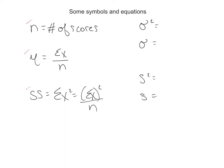So the first one, sum of x squared, you take all the x's, all the scores, you square them, and then you add them up, which is different than over here, where you're going to take all the scores, add them up, and then square it.